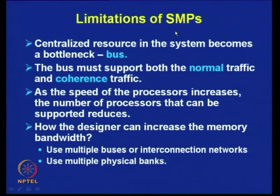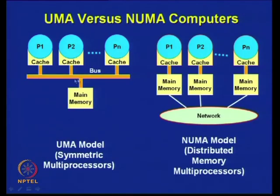We have seen the limitations of symmetric multiprocessors. In the last class, we saw there is a centralized resource in the system that becomes a bottleneck. Whenever there is a centralized resource used by all the processors, it becomes a bottleneck. In the case of symmetric multiprocessors, the shared bus is a bottleneck, because as the speed or number of processors increases, traffic on the bus increases, putting a limit on the number of processors that can be connected.